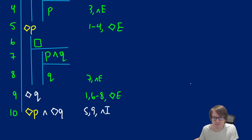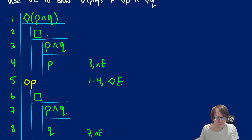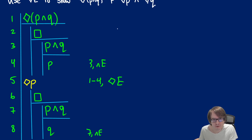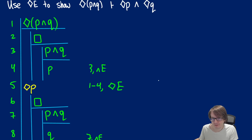We now know how to use the diamond elimination rule and can apply it in our proofs. Without this rule, this proof would be over 25 to 30 lines if done the full way. Thanks to our new theorem and rules, we're able to do it quite quickly. If you have any questions, you know what to do.